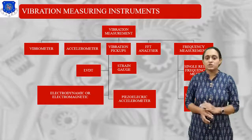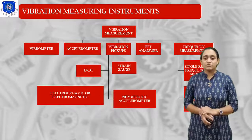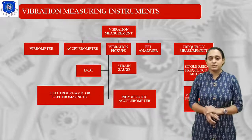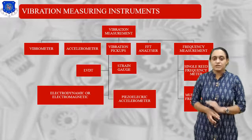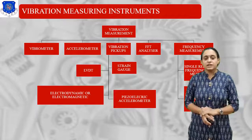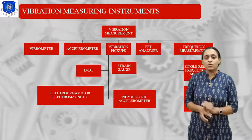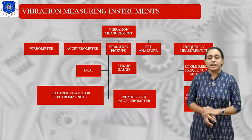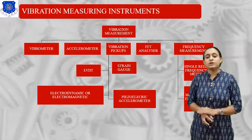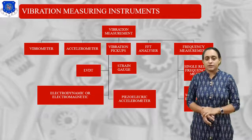In vibration pickups, we have four different types: LVDT, strain gauge, electromagnetic or electrodynamic system, and piezoelectric accelerometer.